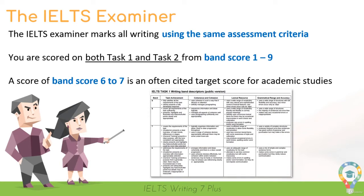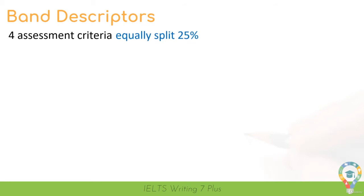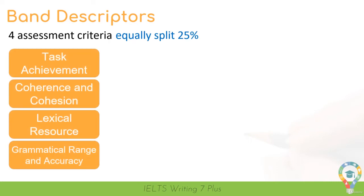Here we have the band descriptors for IELTS task 1, and we can see they go from band score 6 all the way to the top of band score 9. You can see they're split into 4 categories, or 4 segments. Let's take a more focused look at the 4 sections. The band descriptors are split into 4, with each section worth 25% of the final grade. We have task achievement, coherence and cohesion, lexical resource, and grammatical range and accuracy.